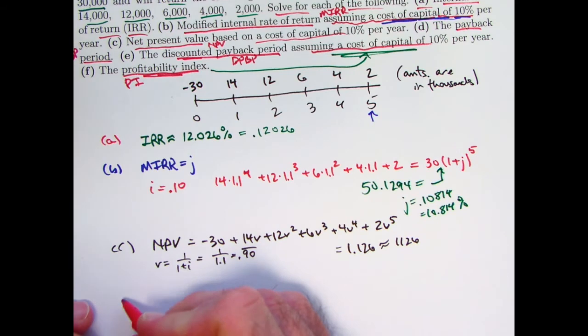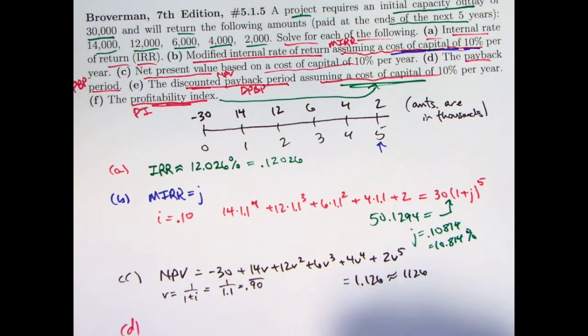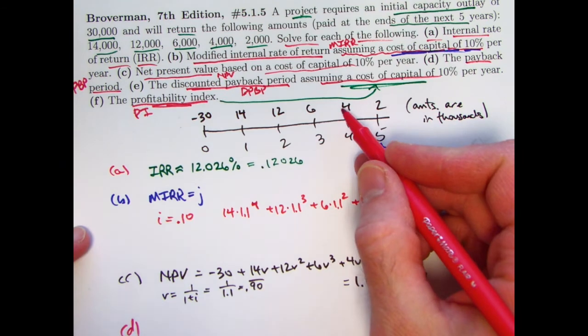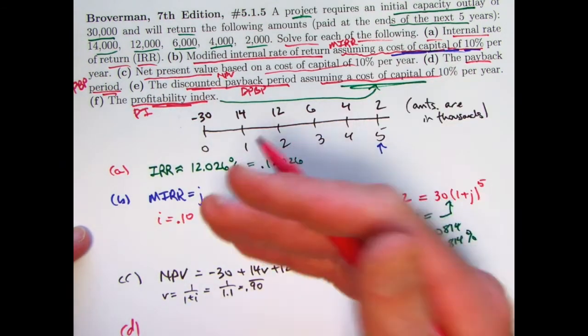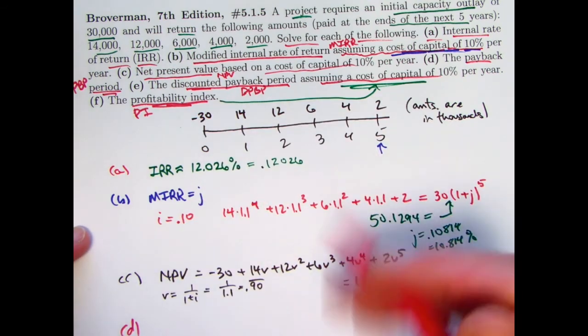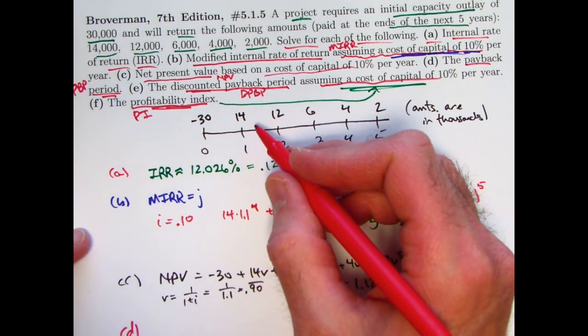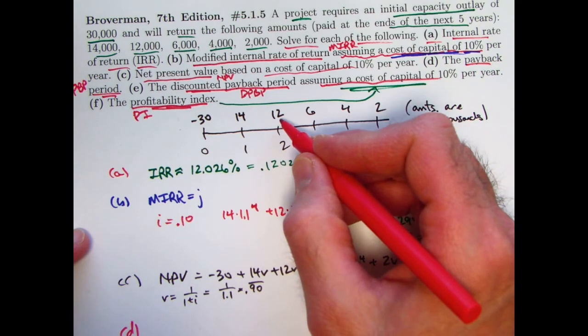All right, on to the payback period. What is the payback period? The payback period is something where you're thinking about getting your money back without thinking about interest, without thinking about the time value of money. So it's not really the most ideal thing. It's just sort of a psychological thing, perhaps. How long do you have to go, it is a payback period, until you first get back more than what you invested, not thinking about interest at all. So we can just look at this timeline and just do calculations in our head to figure out the payback period.